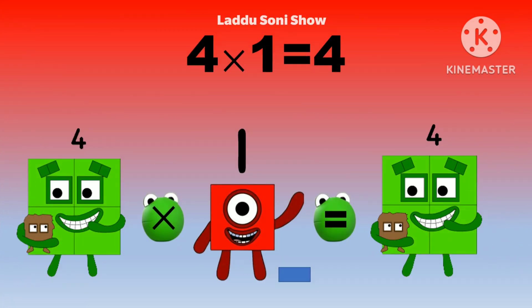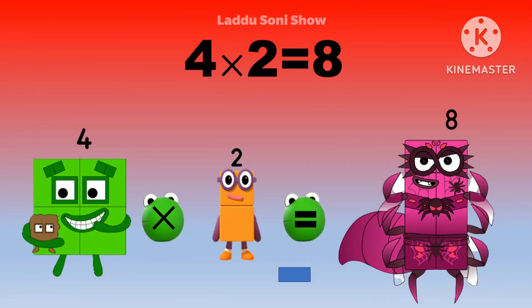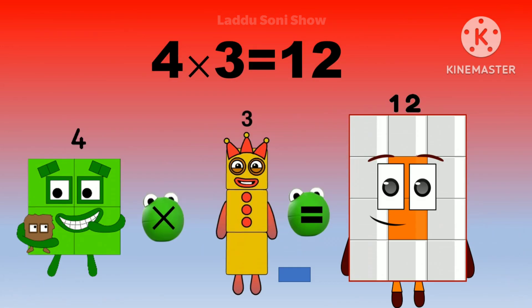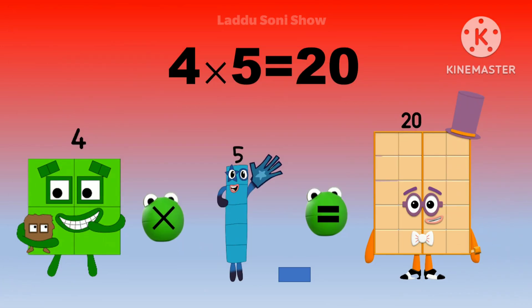Four ones are four. Four twos are eight. Four threes are twelve. Four fours are sixteen. Four fives are twenty.